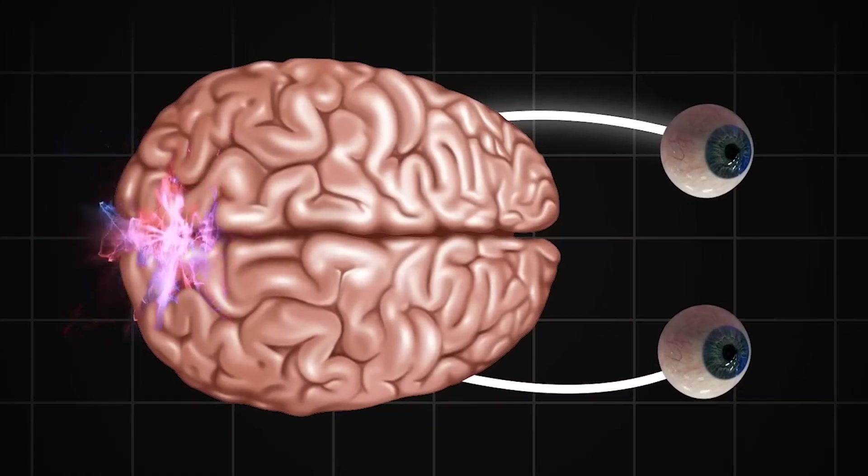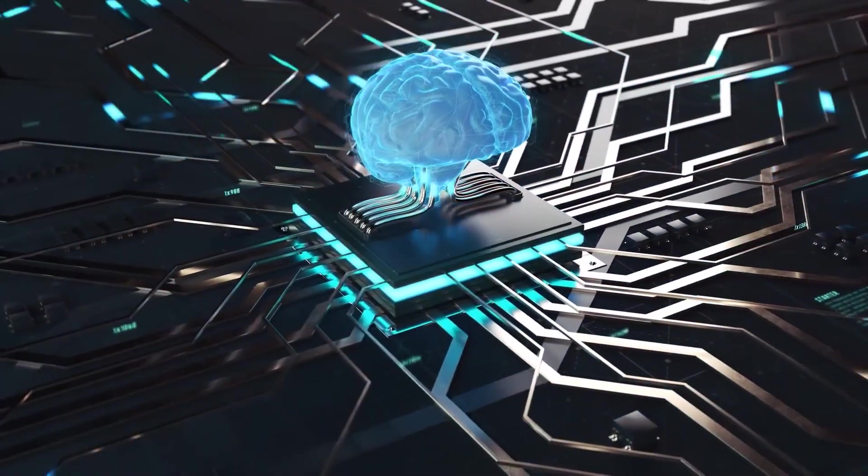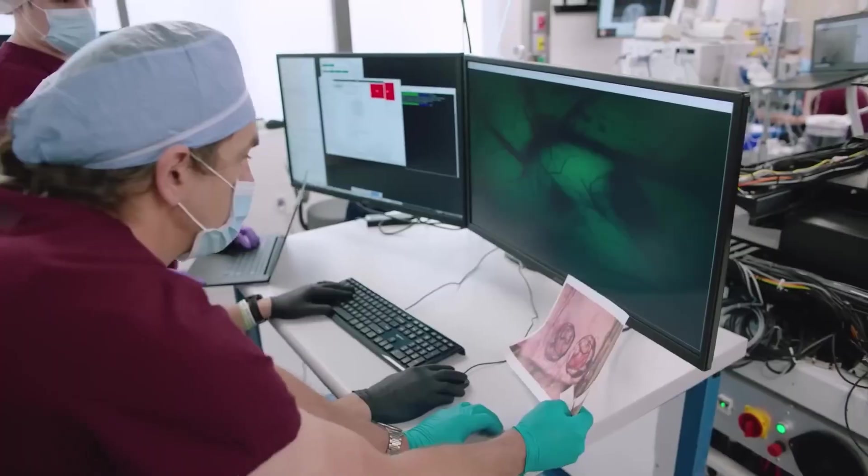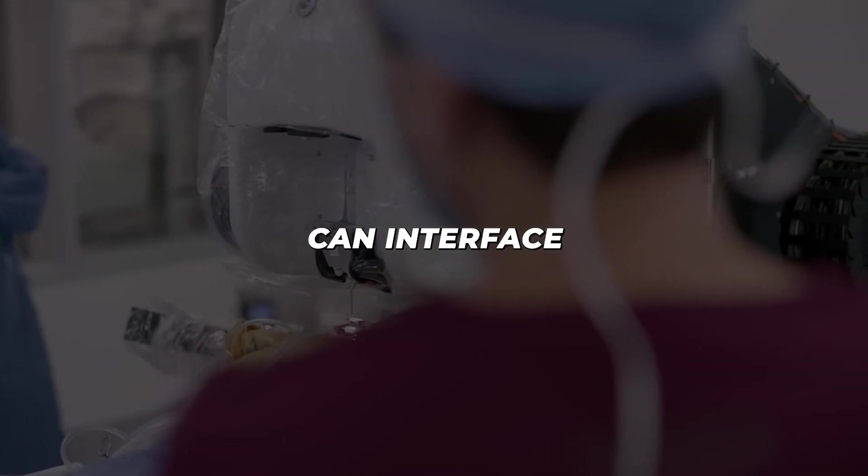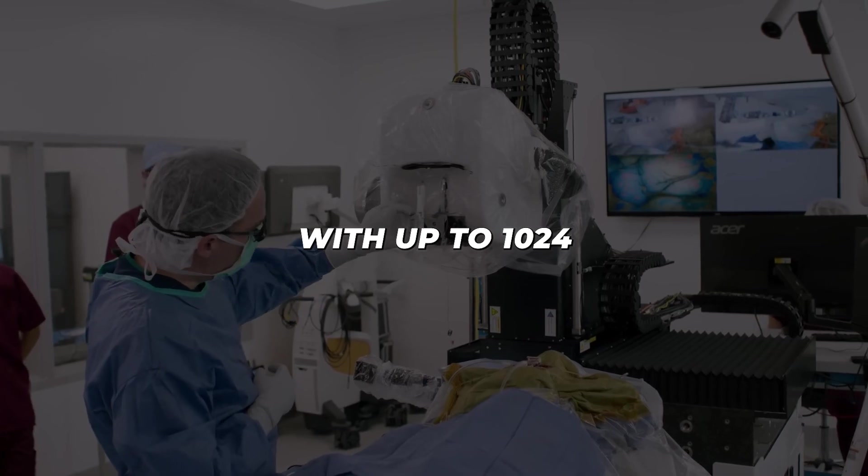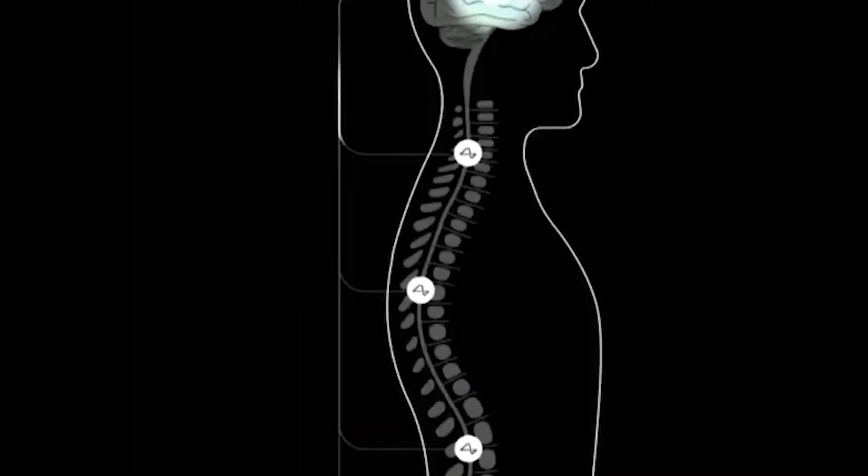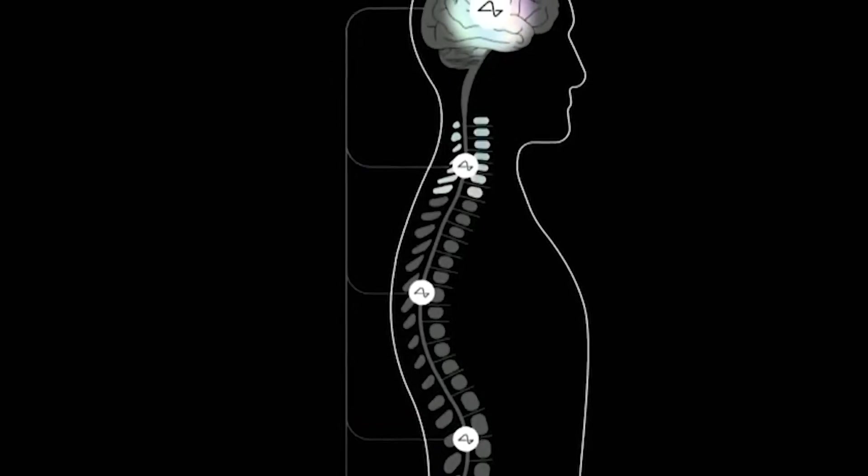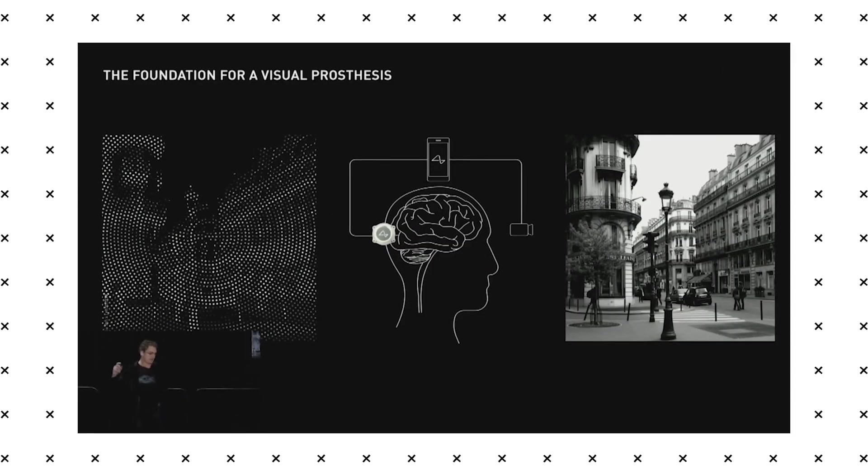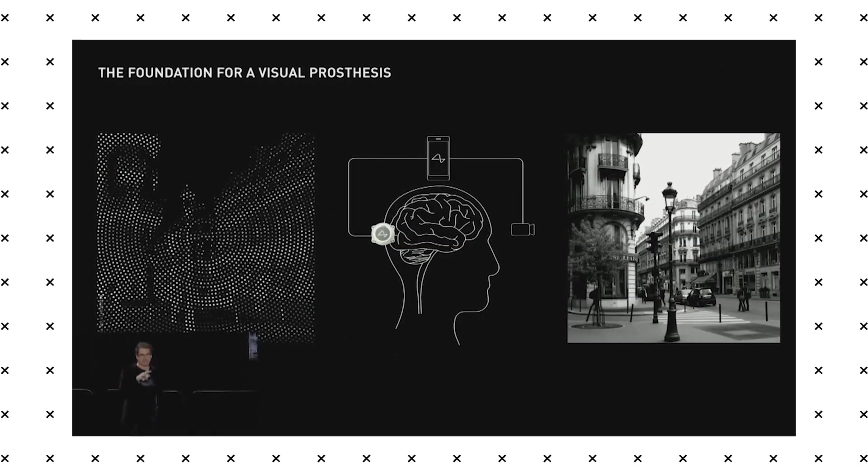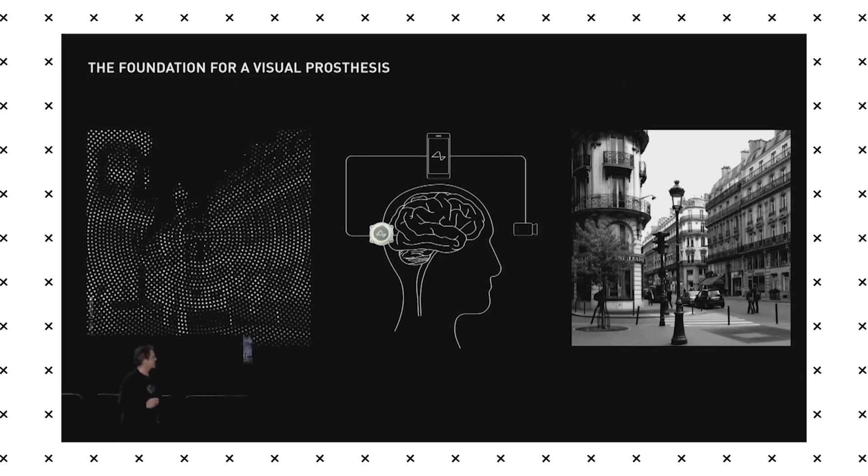What sets Neuralink's approach apart is the unprecedented scale and precision of their neural interface. Their current devices can interface with up to 1,024 neurons simultaneously, with plans to dramatically increase this number in future iterations. This high-resolution interface could potentially provide a more detailed and nuanced visual experience compared to earlier visual prosthetics.